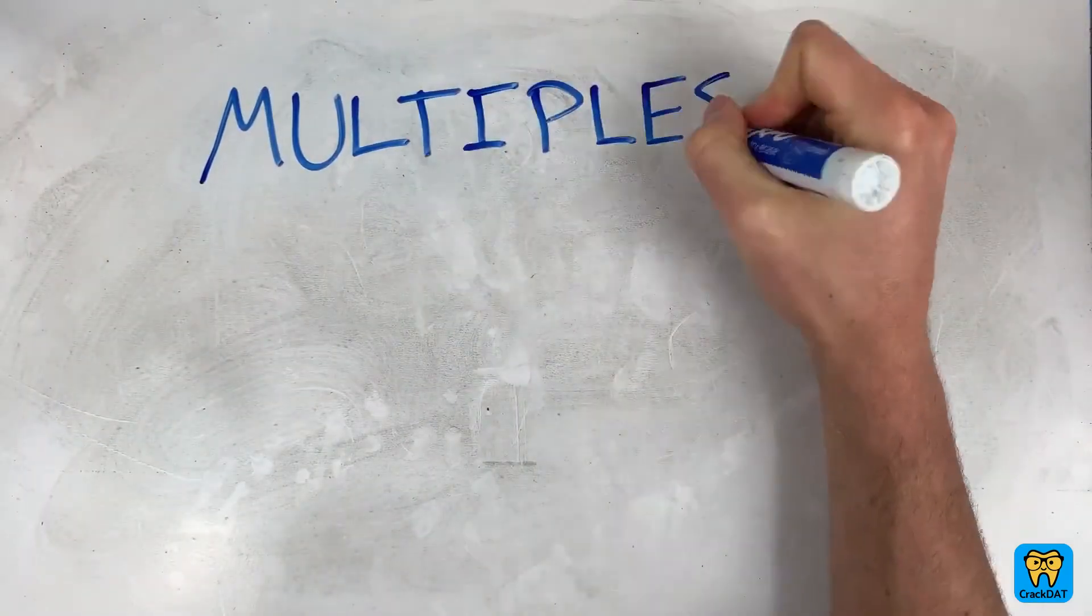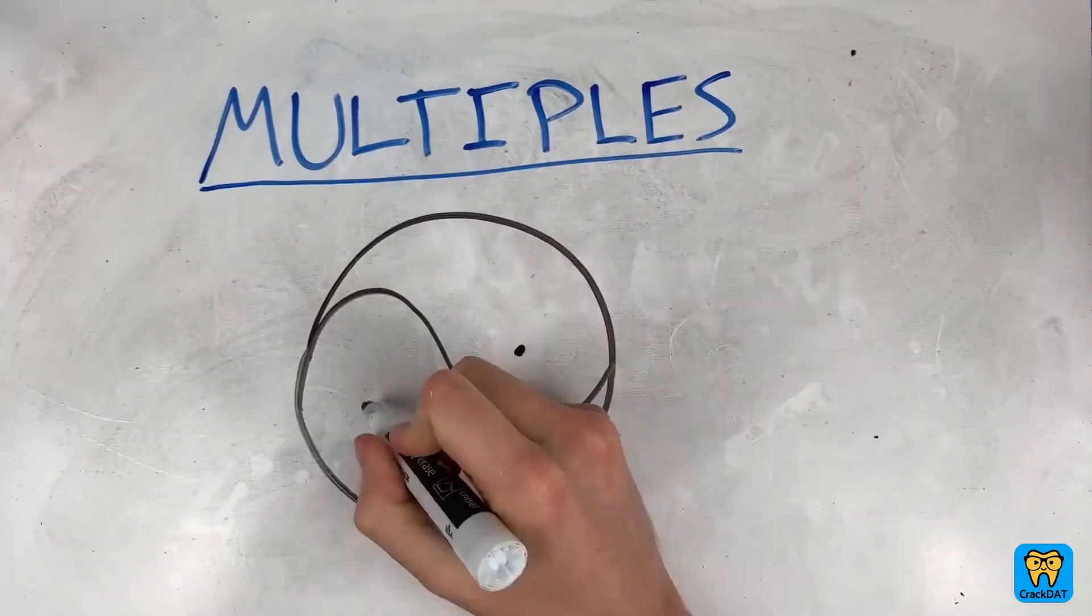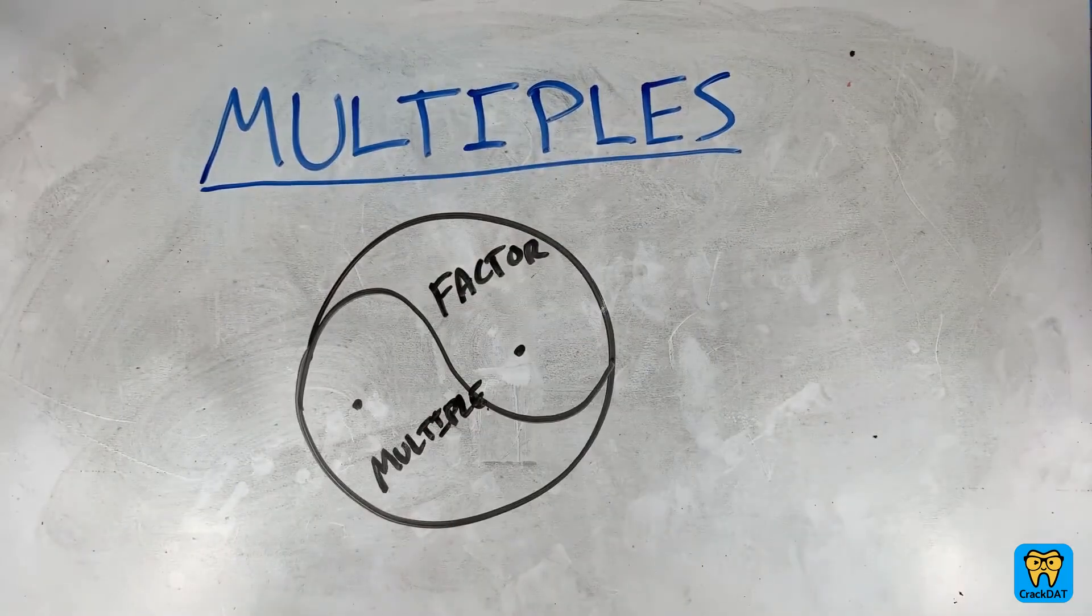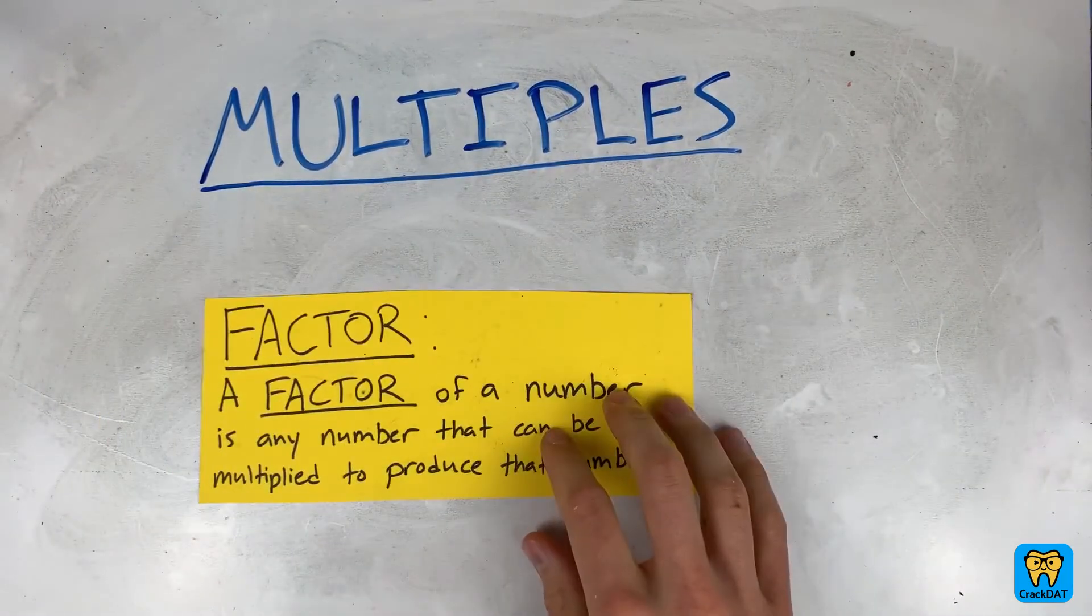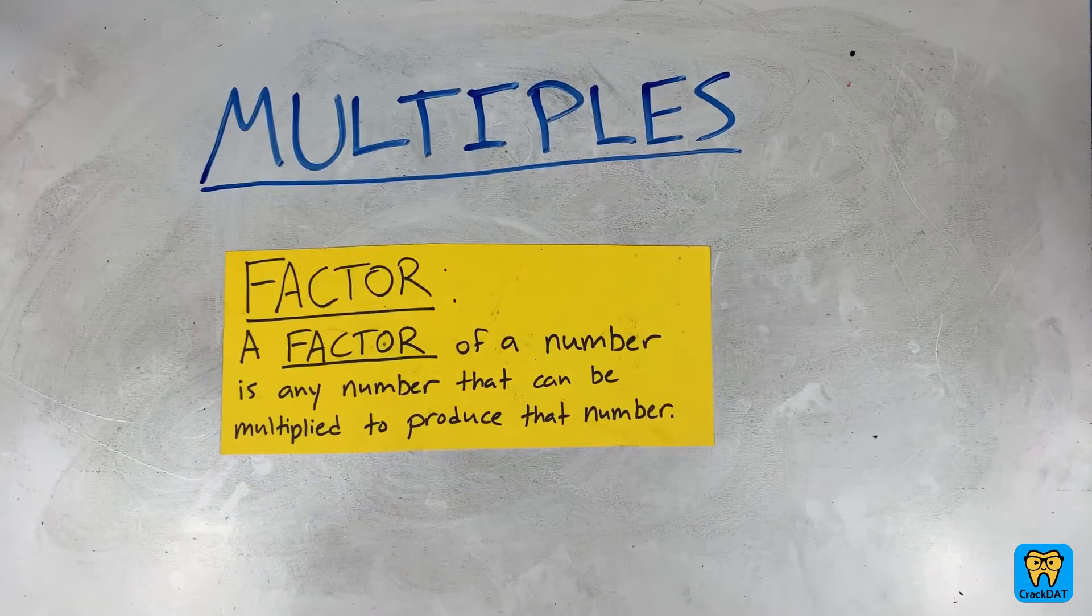Alright, multiples. Where to even begin? Well, multiples are kind of the yin to the factor's yang. So recall a factor of a number is any number that can be multiplied to produce that number.